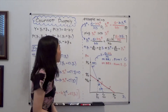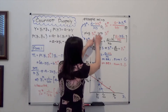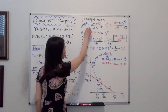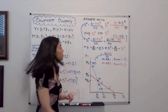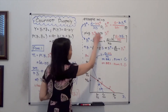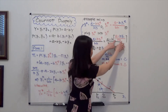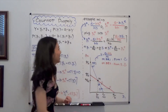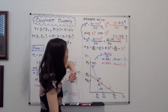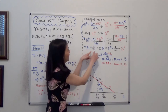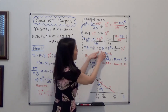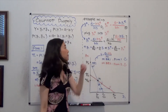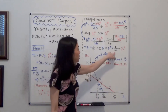Now we can solve for the optimal quantities. We plug Y2 star back into Y2E in equation 1. After substituting equation 2 into Y2E and calculating, we get Y1 star equals A over 4B plus one-quarter Y1. Solving for Y1, we get Y1 star equal to A over 3B. Because firm 1 and firm 2 are identical, Y2 star is also equal to A over 3B.